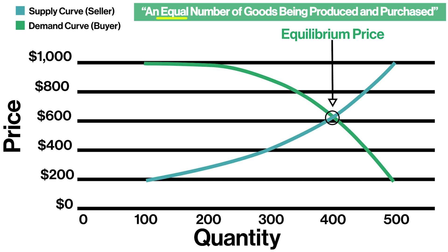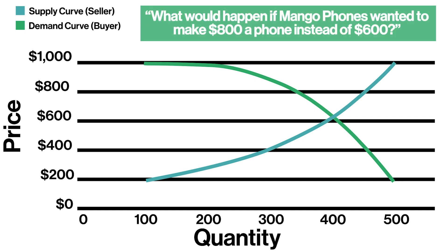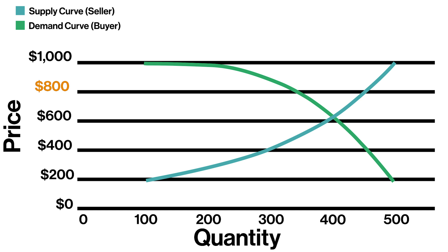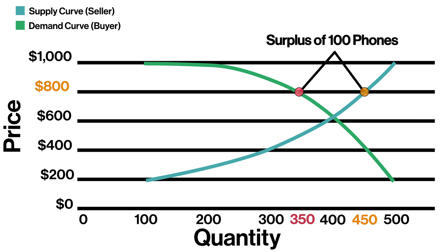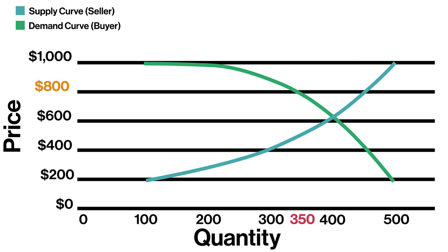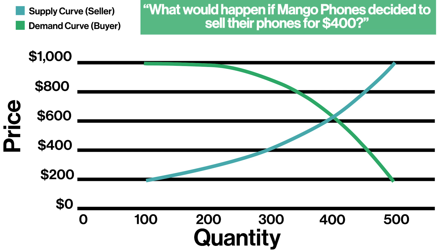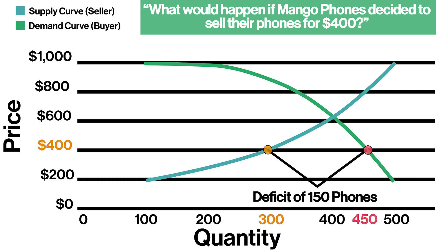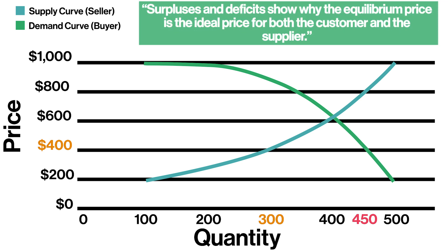Think of equilibrium as an equal number of goods being produced and purchased. If Mango Phones wanted to make $800 a phone instead of $600, they would produce about 450 phones, yet customers would only want to buy about 350 phones — this would create a surplus of 100 phones. A surplus occurs when there are more goods on the market than consumers actually want. In the opposite direction, if Mango Phones decided to sell phones for $400, they would produce about 300 phones yet customers would want to buy 450 phones, creating a deficit of 150 phones. Surpluses and deficits show why the equilibrium price is the ideal price for both the customer and the supplier.